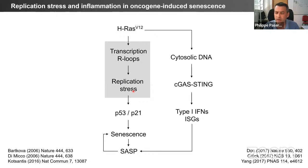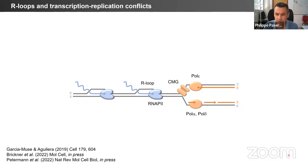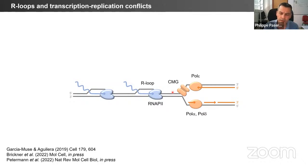Before going into that, I want to tell you briefly about some unpublished results on the connection between transcription deregulation, R-loops, and replication stress. R-loops are RNA-DNA hybrids forming when nascent RNA re-anneals with the template DNA during transcription, forming a displaced DNA loop. This structure is believed to be very stable and can be an obstacle for replication forks.